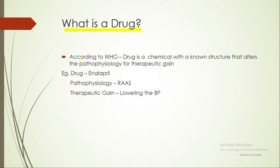According to WHO, a drug is a chemical with a known structure that alters the pathophysiology for therapeutic gain. For example, the drug enalapril alters the pathophysiology of our body by altering the RAAS mechanism, and its therapeutic gain is that it lowers blood pressure.